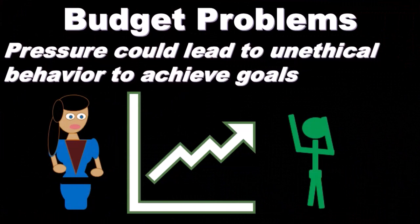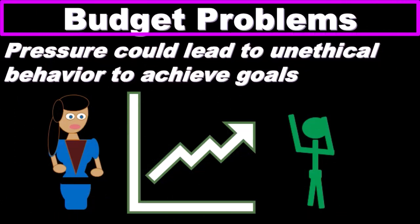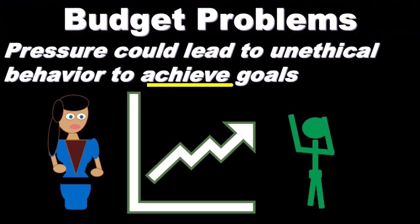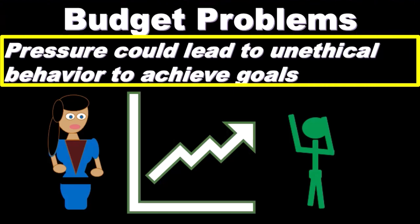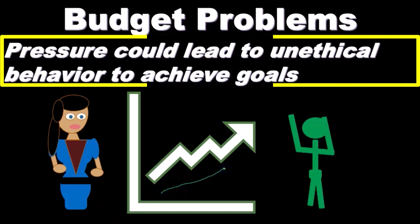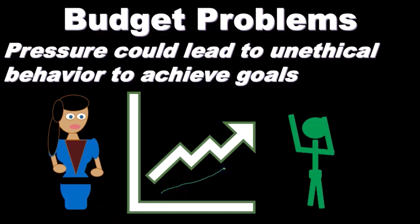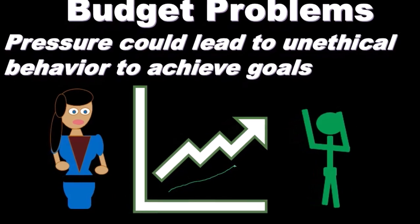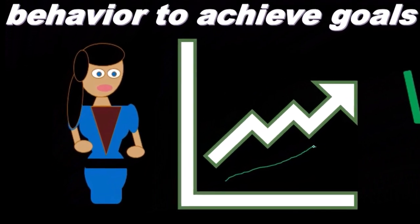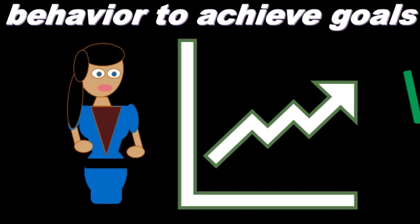Another problem inherent in the budgeting process is that we typically want to set budgeting goals with a challenging growth pattern. When we consider the budget, we're looking for a smooth growth trend — we want to see net sales going up in a nice, smooth pattern.